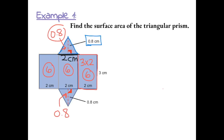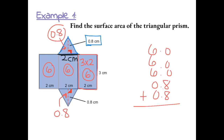To find the surface area of the whole prism, we add up all of the areas. We have 6 three times, and 0.8 two times. Lining up our decimals: 8 plus 8 gives us 16, then 6, 12, 18, 19.6. Because it's area, the answer is 19.6 centimeters squared.